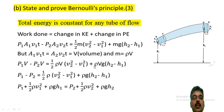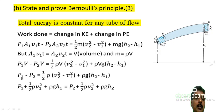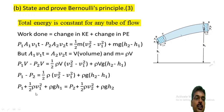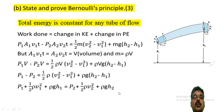After substitution and rearrangement, we arrive at Bernoulli's equation: P1 plus half rho v1 squared plus rho g h1 equals P2 plus half rho v2 squared plus rho g h2. This is the derivation of Bernoulli's principle.